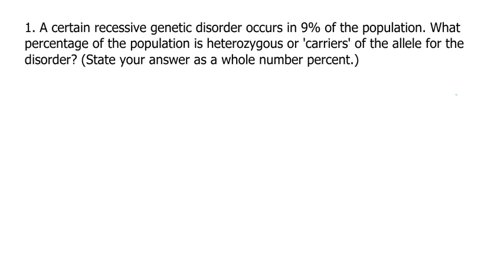A certain recessive genetic disorder occurs in 9% of the population. Because this is recessive, we know that is our q-squared genotype. It occurs in 9% of the population, which we will convert to a decimal by dividing by 100. So that's 0.09. We'll start by writing q-squared equals 0.09.